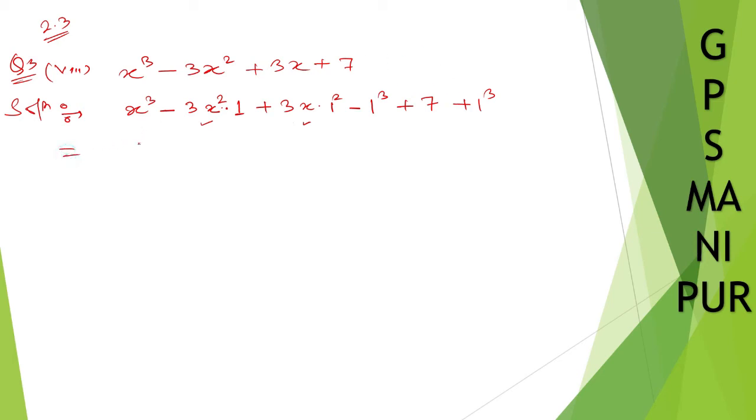So now we can write this as x minus 1 whole cube plus 7 plus 1, it is 8.